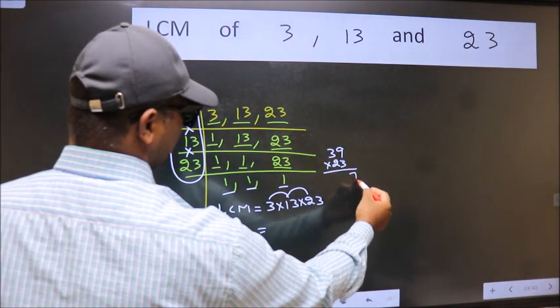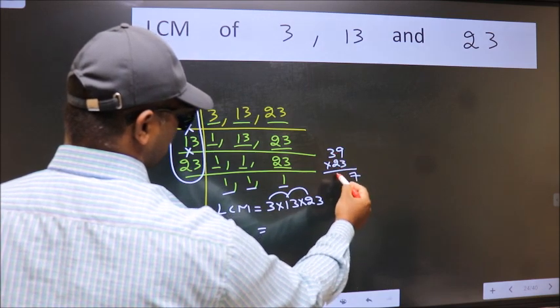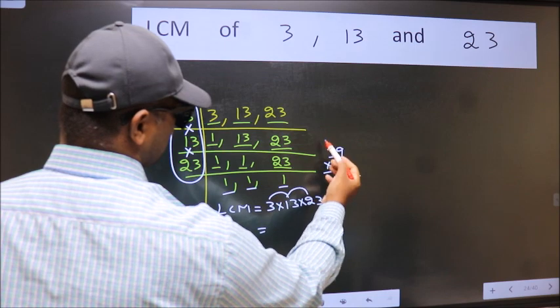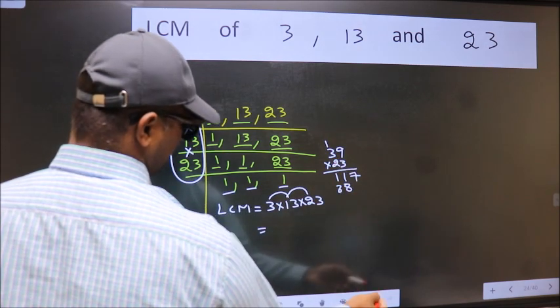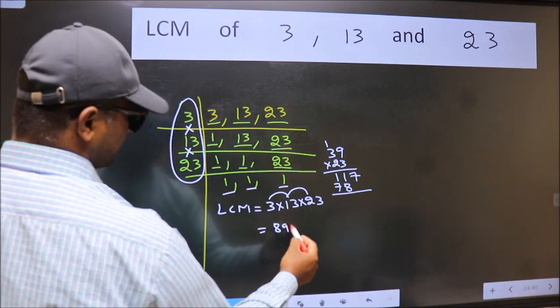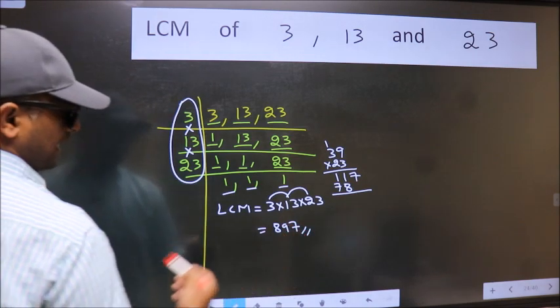3 nines 27. 3 threes 9 plus 2, 11. 2 nines 18. 2 threes 6 plus 1, 7. So we get 897 is our LCM.